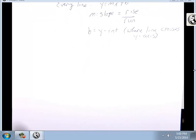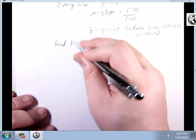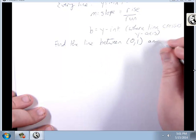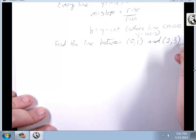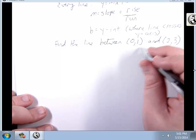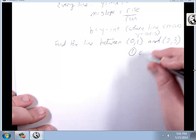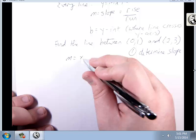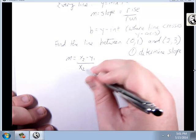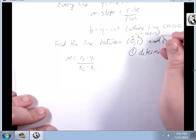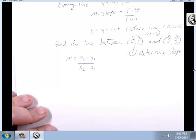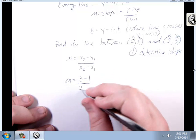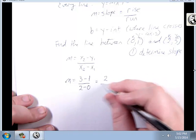So let's find the line between the points (0, 1) and (2, 3). It's an easy two-step process. First, determine slope. m equals y2 minus y1 over x2 minus x1. This is x1, y1 and this is x2, y2. Substituting in: m equals 3 minus 1 over 2 minus 0. 3 minus 1 is 2, 2 minus 0 is 2, so my slope is 1.